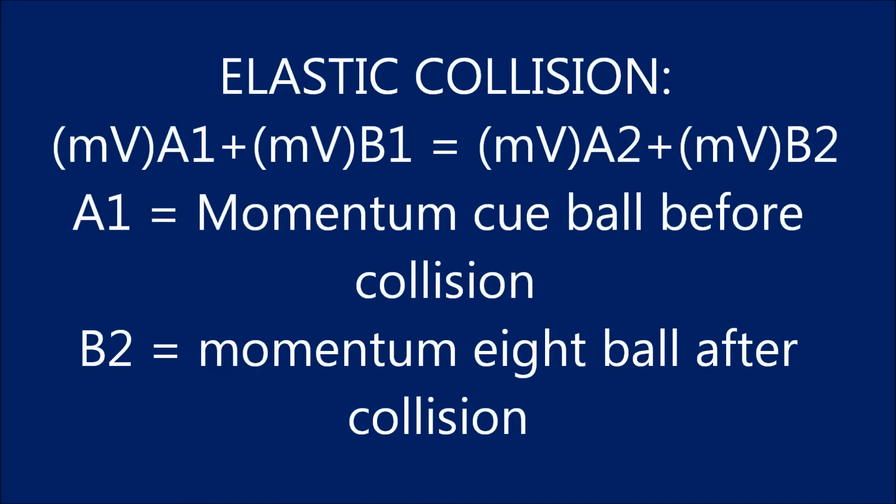Knowing that the total momentum after is equal to the total momentum before, we can then use the elastic collisions formula to solve for the velocity of the eight ball. This formula is MVA1 plus MVB1 is equal to MVA2 plus MVB2, where B2 is the momentum of the eight ball after the collision and A1 is the momentum of the cue ball before the collision.